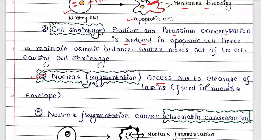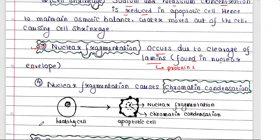Next is nuclear fragmentation, which occurs due to the cleavage of lamins. Lamins are proteins found in the nuclear envelope or nuclear membrane. These proteins are cleaved during apoptosis, hence the nuclear membrane gets distorted. In this picture we can see that in the healthy cell the nuclear membrane is intact, while in the apoptotic cell the nuclear membrane is fragmented.